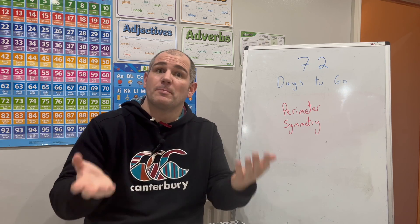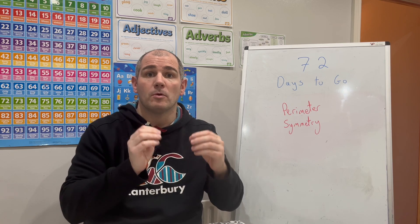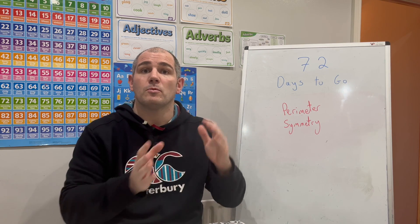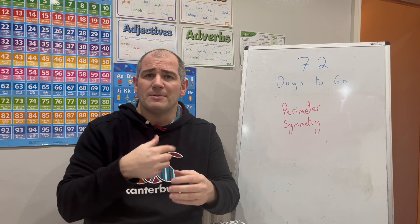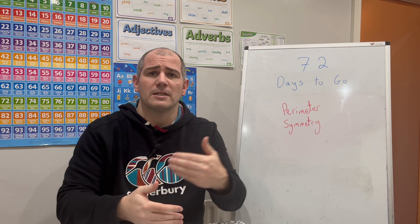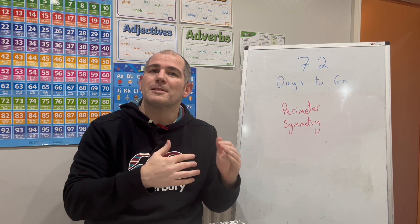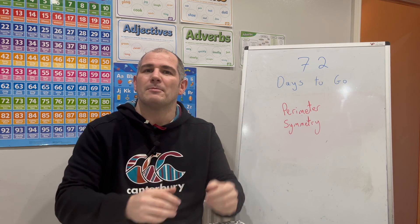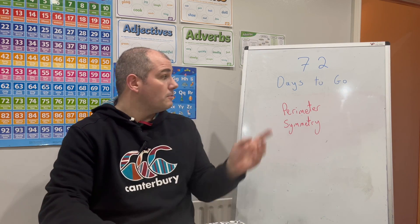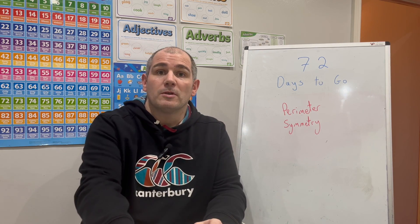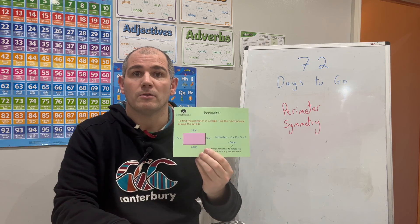Two different topics here, but both shape, space, and measure topics. I'm doing two topics today just so we can get a bit more material covered, leaving more time towards the end for special papers and tests before the exam. So perimeter — finding the perimeter of shapes — that's card number 16 if you've got the revision cards.